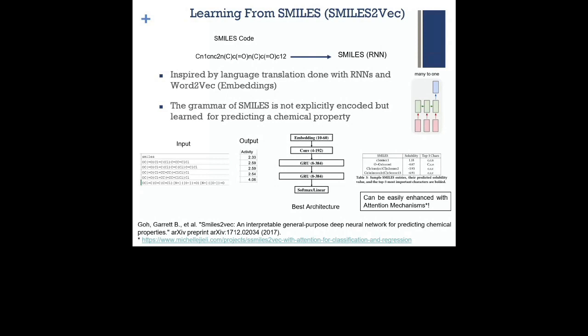They do something like this: the input is the SMILES sequence itself, and the output is some chemical properties. With a simple neural network — an embedding, then a convolution, then two gated recurrent units that are bidirectional, then a softmax — they predict the property. They learn patterns actually related to the property, highlighted on the right. This structure can also be extended with attention models and can be easily explained.